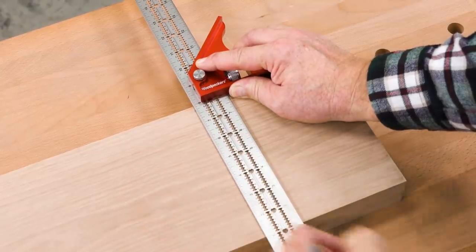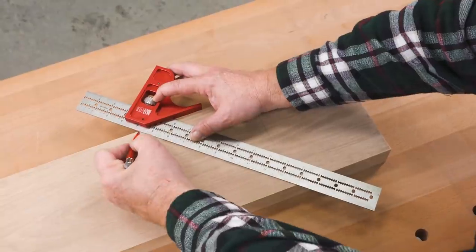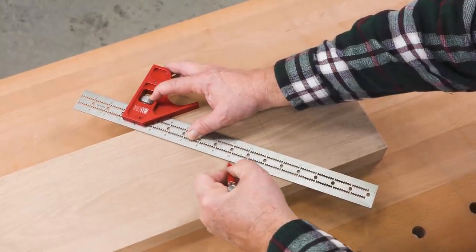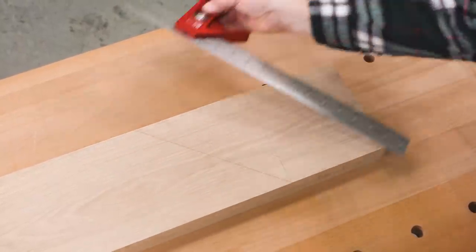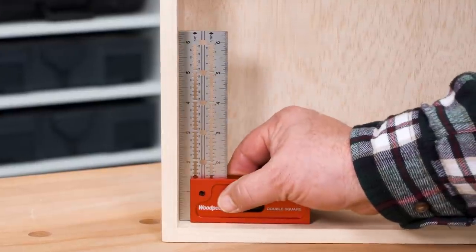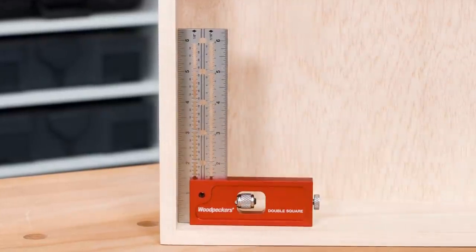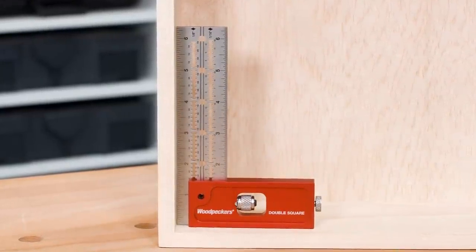The combination square gives you a square and a miter square in the same tool. The double squares are square on both sides and a bit more compact than the combination squares.